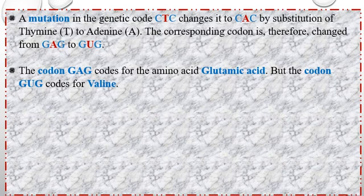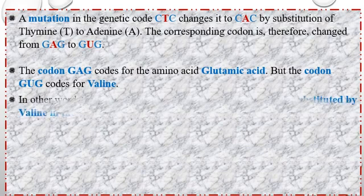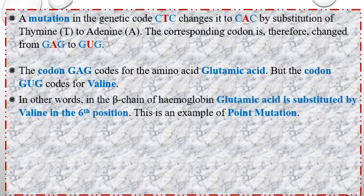The code GUG codes for valine. So glutamic acid is replaced by valine at the 6th position of the beta chain. This is a point mutation, also called substitution mutation.